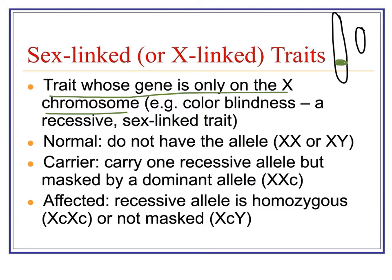If someone is normal — not colorblind at all — they do not have the allele for colorblindness; they have the allele for regular color vision, shown as XX or XY depending on female or male. It's really important when talking about X-linked traits that we include the sex chromosomes. A female may be a carrier for colorblindness, meaning she has one normal color vision allele and one colorblindness allele, but because it's recessive and she has the dominant allele, she would not be colorblind. A female could be affected if she had two recessive alleles. A male could be affected with just one copy, because the Y chromosome doesn't have a dominant allele to mask it.